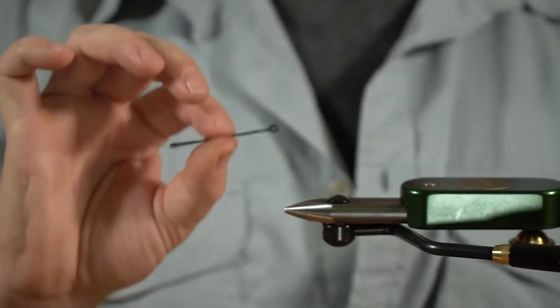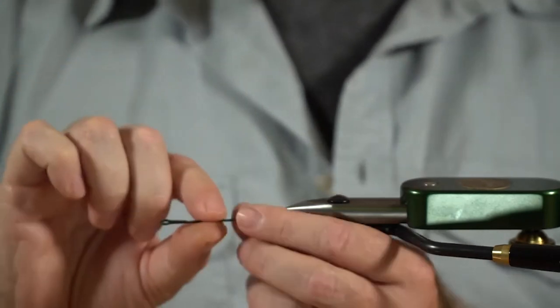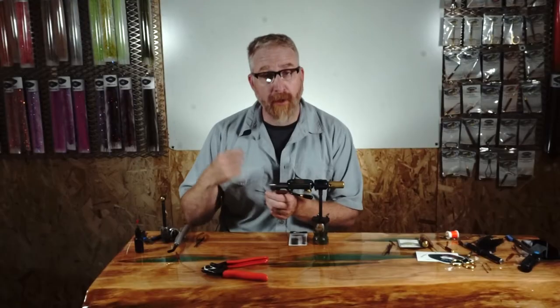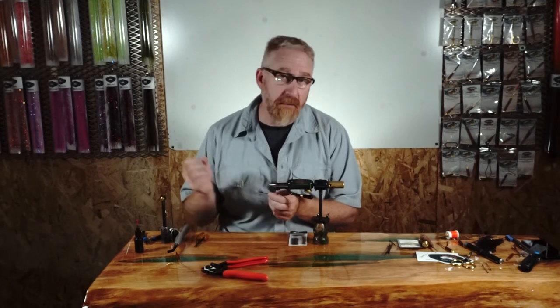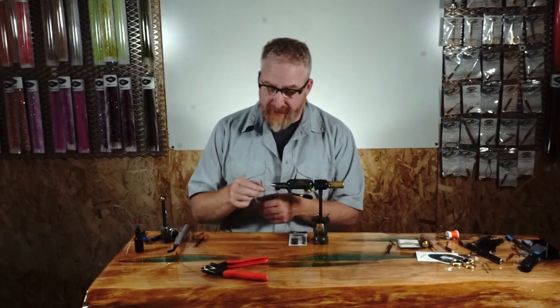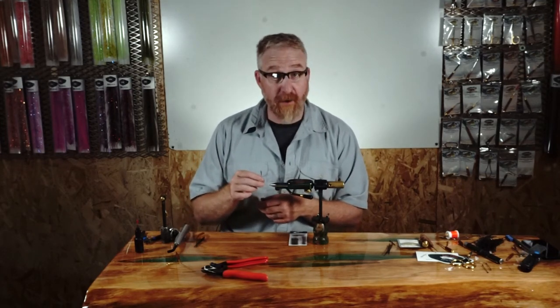We've also added a textured paint on these shanks. That textured paint is going to help your thread stick. It's not going to be able to slide off of the back and you're going to find that it's not going to rotate around.